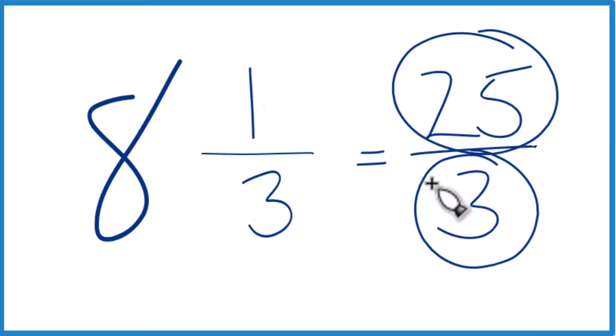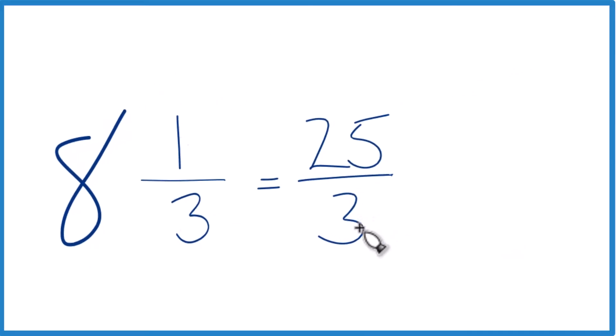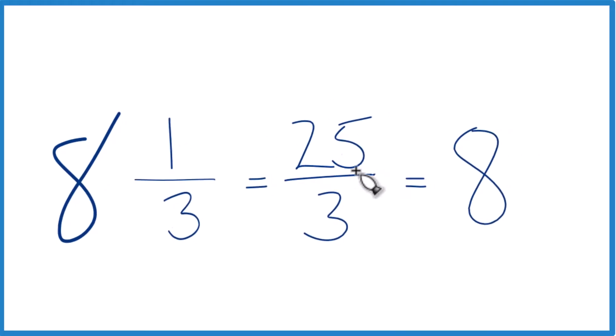You got it. We can even check our work here because 3 goes into 25. 3 times 8, that's 24, and we'd have 1 left over. Bring that 3 across, 8 and one-third.